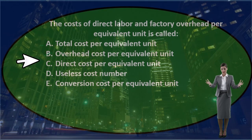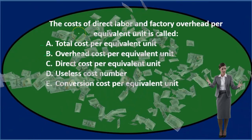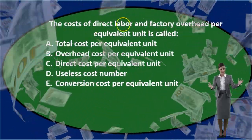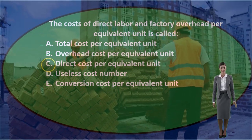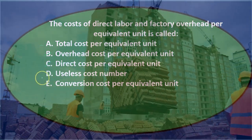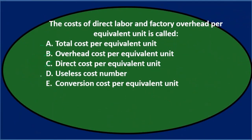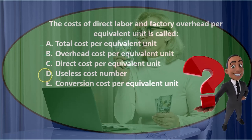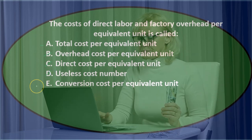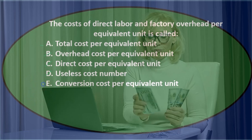Option C, direct cost per equivalent unit — direct costs are usually materials and labor, not overhead. Overhead is indirect, that's why it's called overhead. So it's not generally the direct costs. Option D, useless cost number — that's probably just a made-up term; they're probably not going to ask a question about that.